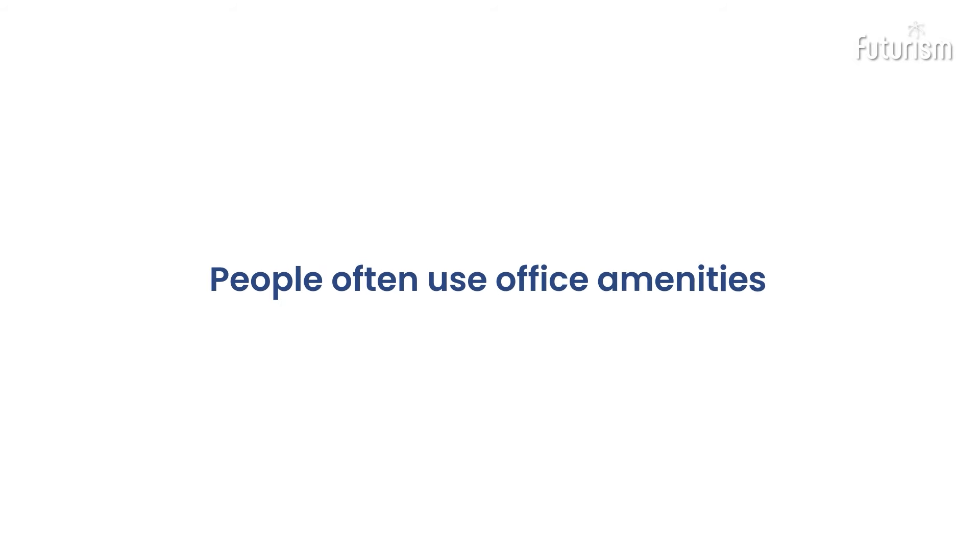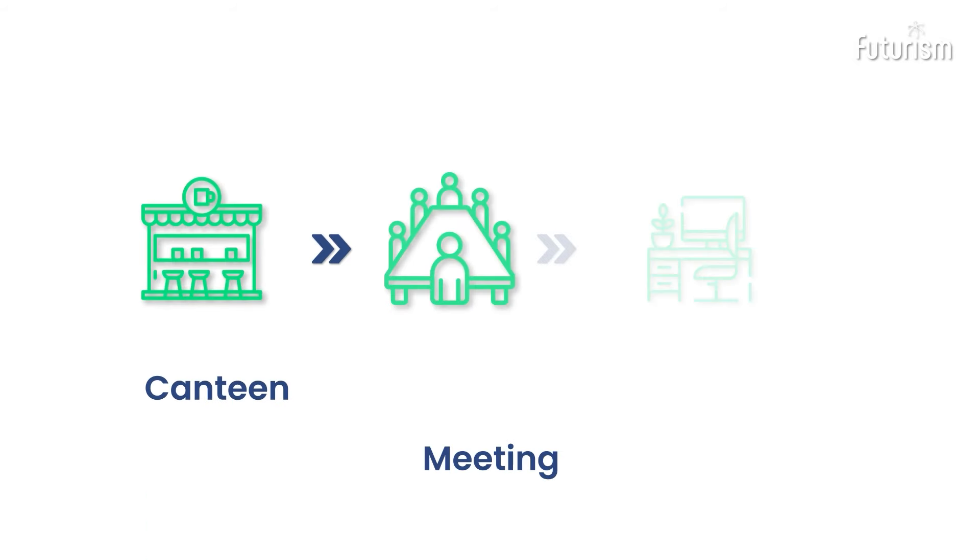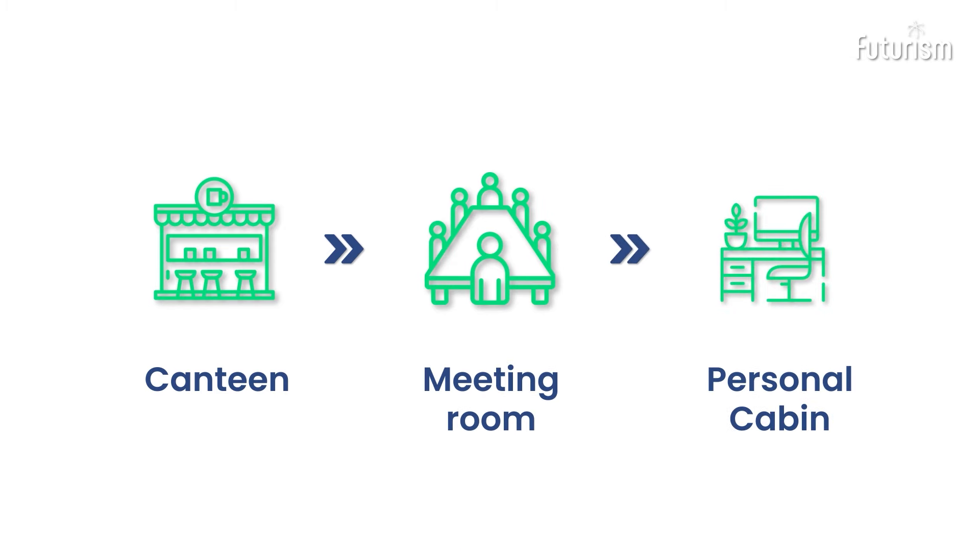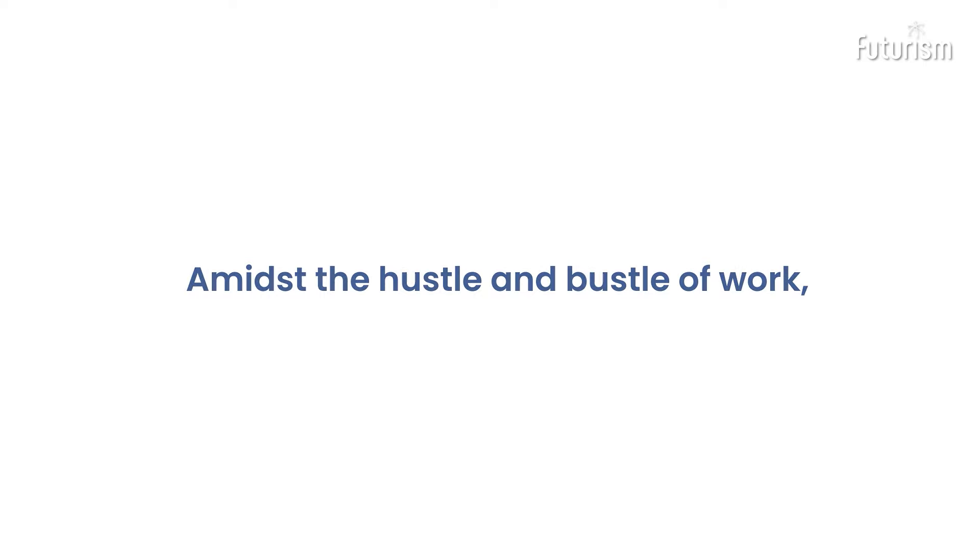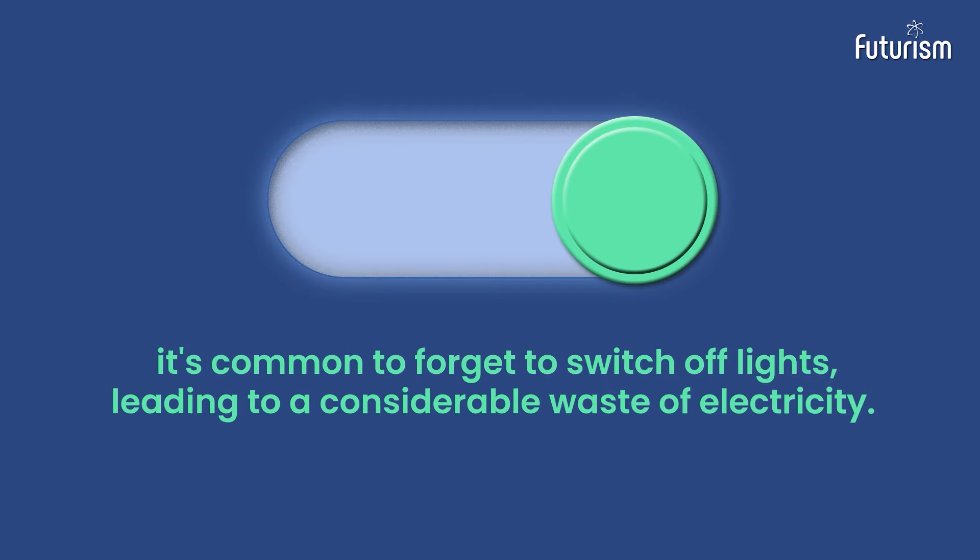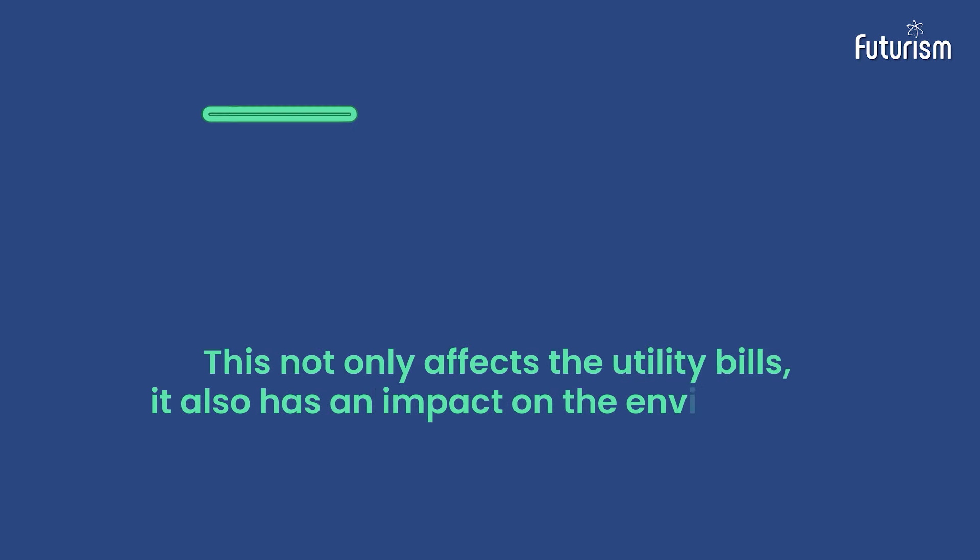People often use office amenities like the canteen, meeting rooms, and personal cabins amidst the hustle and bustle of work. It's common to forget to switch off lights, leading to a considerable waste of electricity.